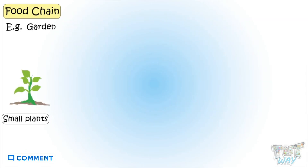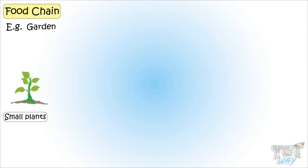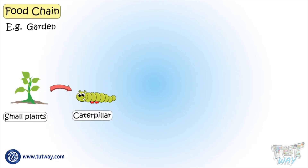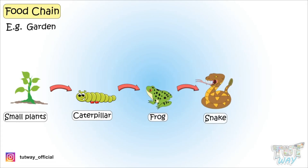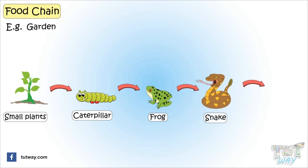Now let's have a look at another example. Grasses, small plants, and flowers are eaten by caterpillars. The caterpillar is eaten by the frog. The frog is eaten by the snake. And the snake is eaten by an eagle.